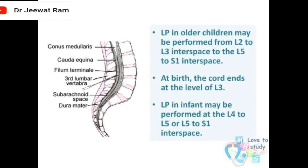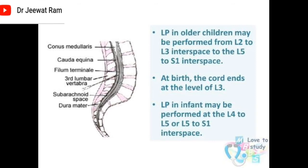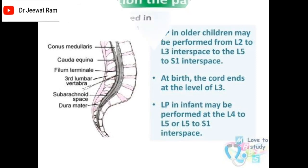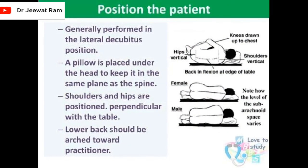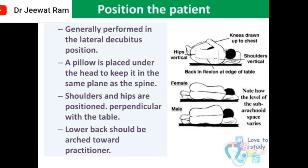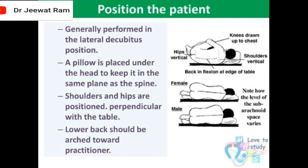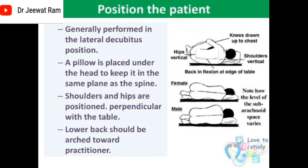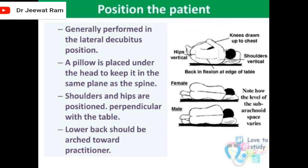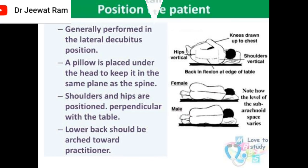Lumbar puncture in infants may be performed from the L4-L5 or L5-S1 interspace. Position the patient — generally performed in the lateral decubitus position. A pillow is placed under the head to keep it in the same plane as the spine. Shoulders and hips are positioned perpendicular with the table. The lower back should be arched toward the practitioner.